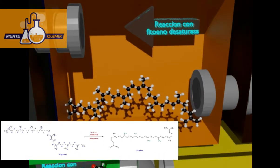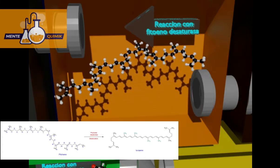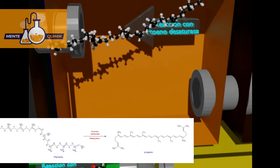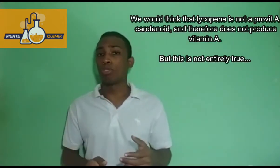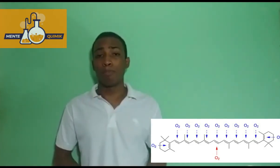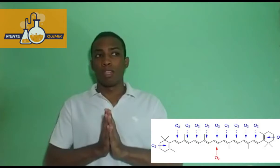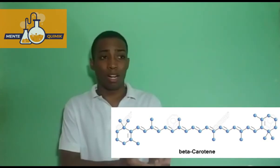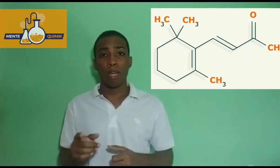Phytoene undergoes a series of desaturations to produce lycopene. We might think that lycopene is not a provitamin A molecule and therefore doesn't produce vitamin A, but this is not entirely true. Provitamin A molecules, when they are in the intestine, are capable of being converted into vitamin A or retinol through an oxidative breakdown — such as beta-carotene, alpha-carotene, and gamma-carotene. These characteristics occur because they have in their structure a cyclic compound called beta-ionone, as we see in the following examples.